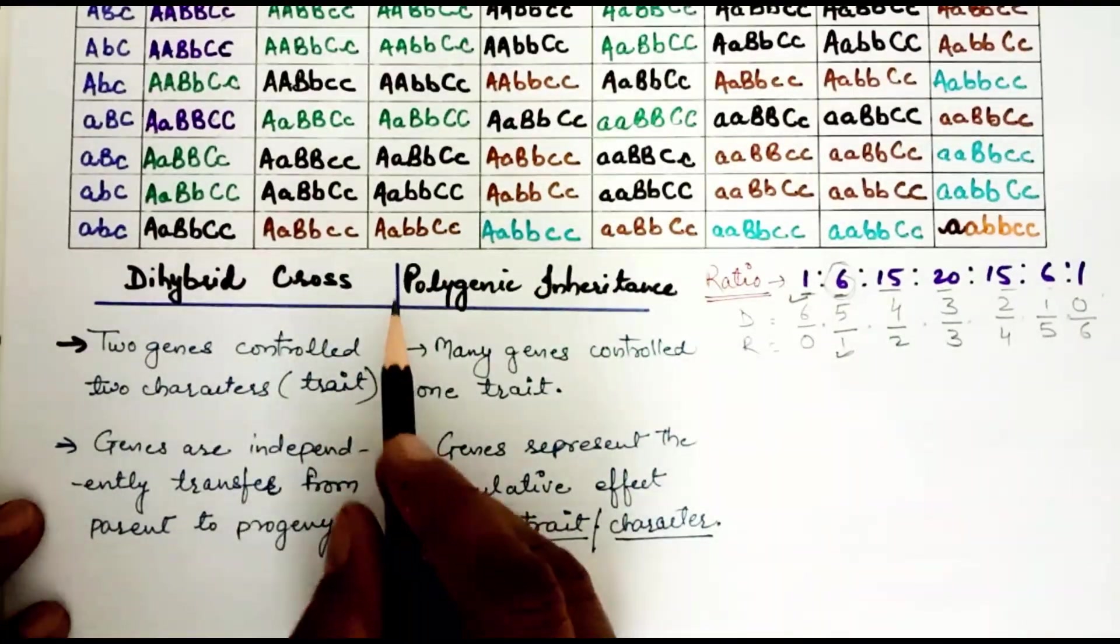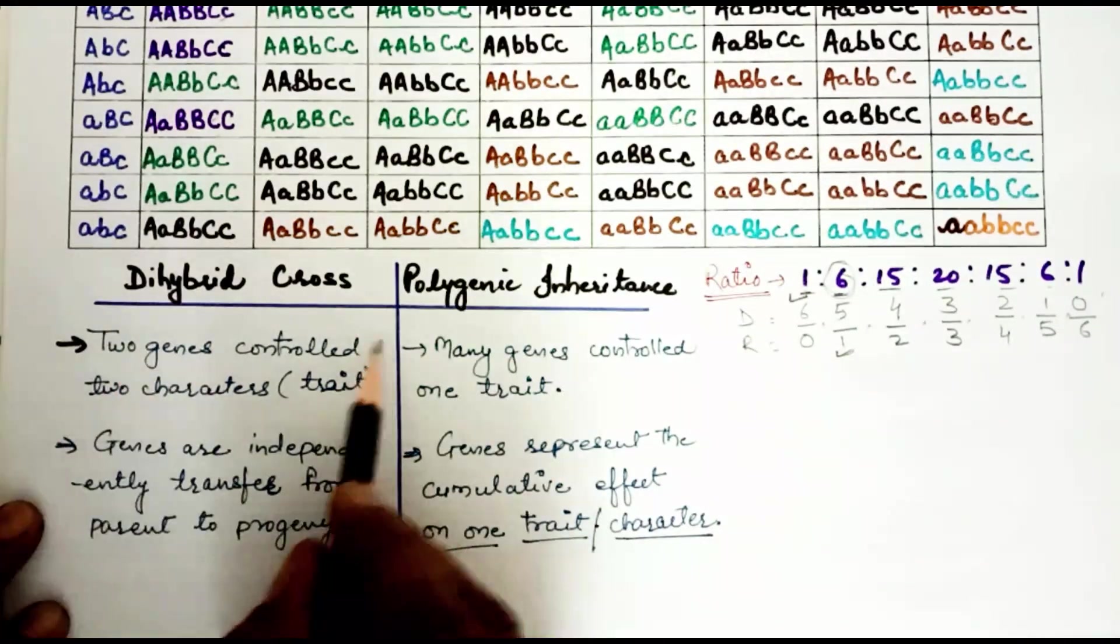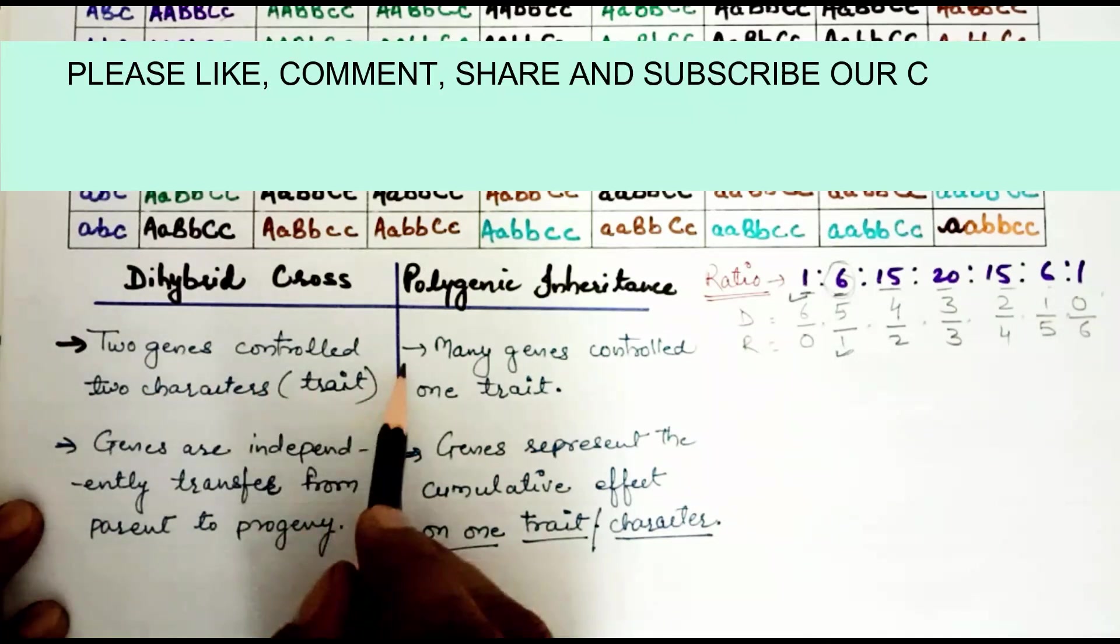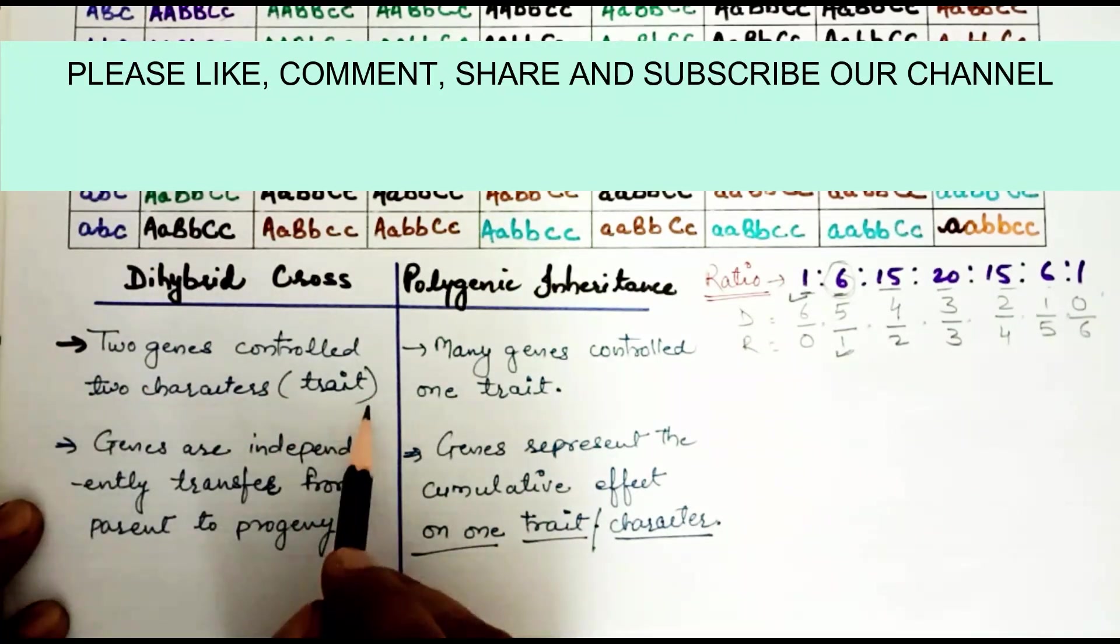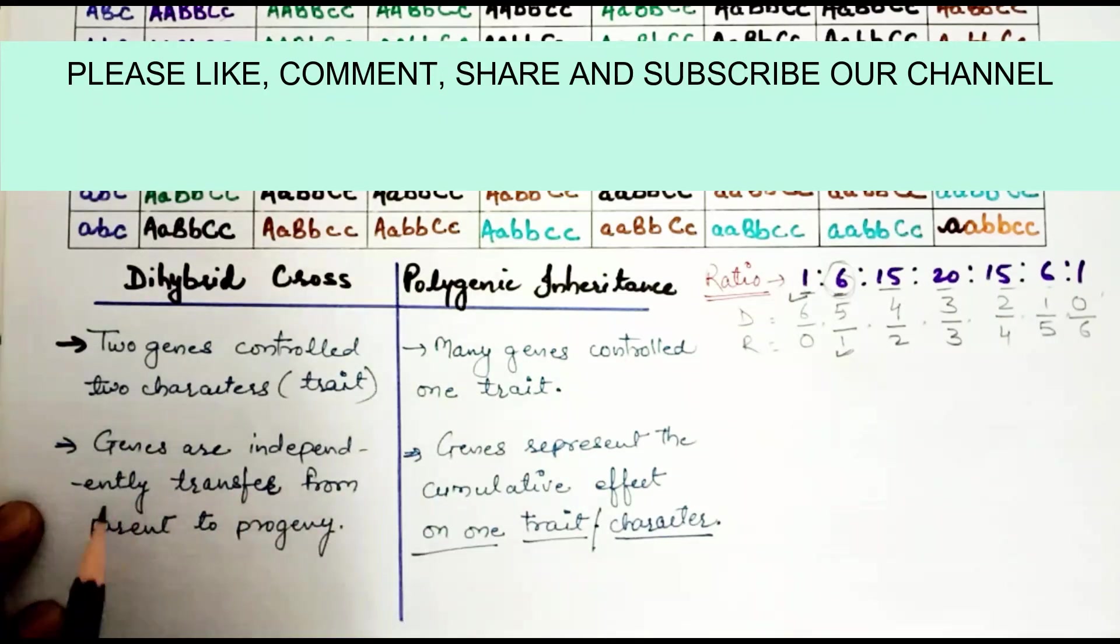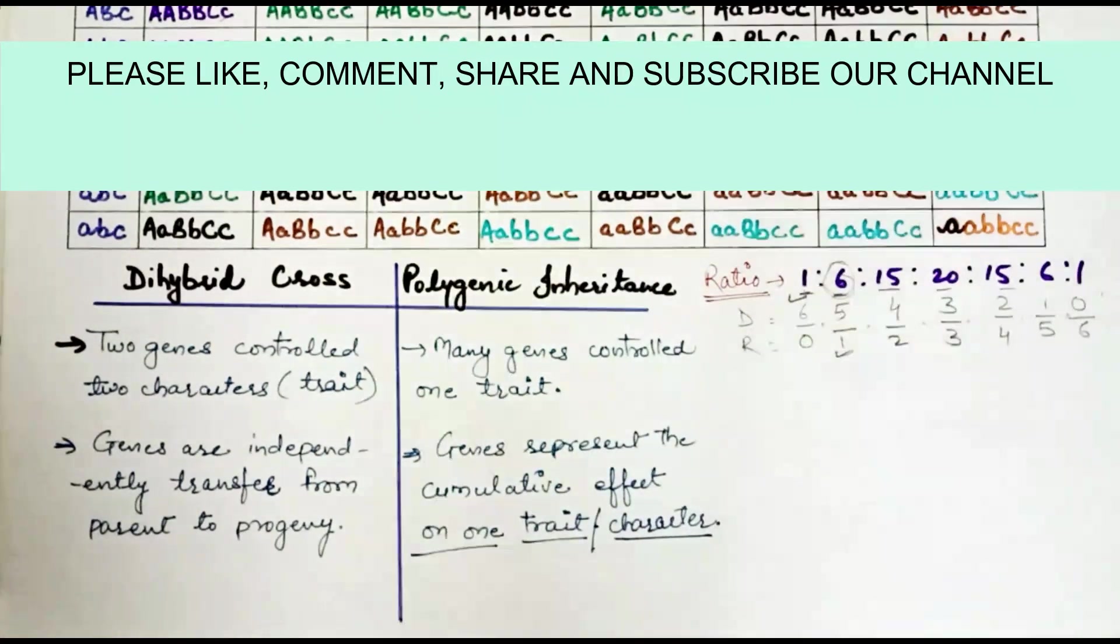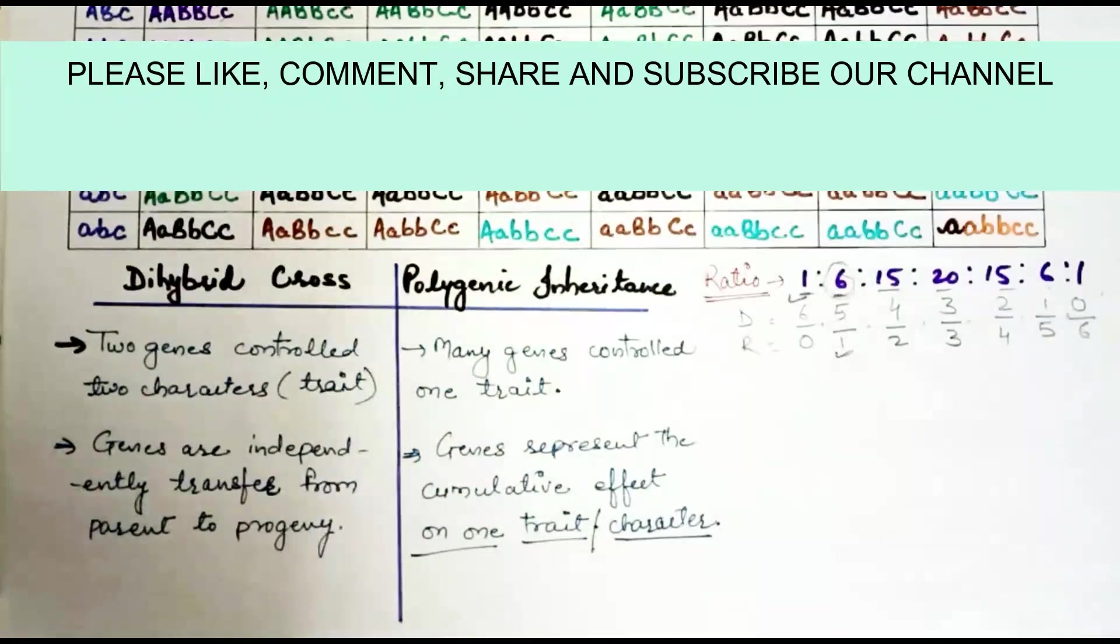The difference between Dihybrid Cross and Polygenic Inheritance: In Dihybrid Cross, 2 genes control 2 characters or 2 traits. But in Polygenic Inheritance, many genes control 1 trait. Second difference: Genes are independently transferred from parent to progeny. But in Polygenic Inheritance, genes represent the cumulative effect on 1 trait or 1 character. The genes together control a particular trait in the progeny.